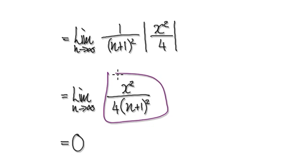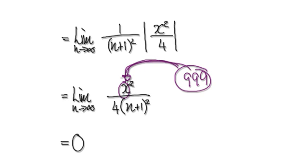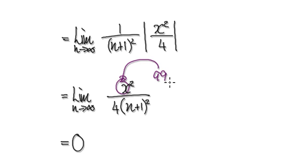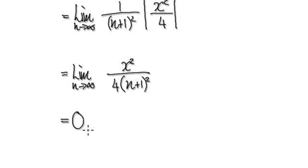Once you're here, take the limit. Remember, x is fixed once you set the problem in motion. For example, if you put 999 into x, then x stays fixed as 999 throughout the whole process. So as n tends to infinity, x squared over 4(n+1)² will head towards zero — no matter how large x is, the overall limit will be zero.